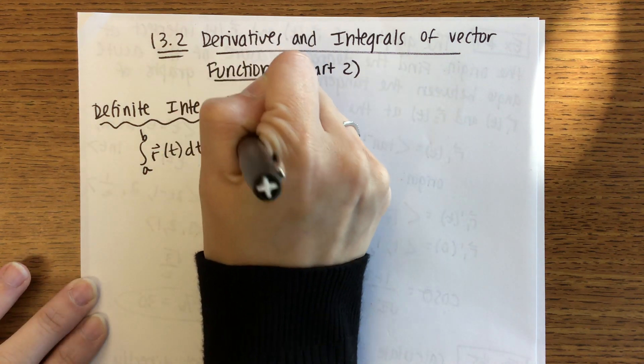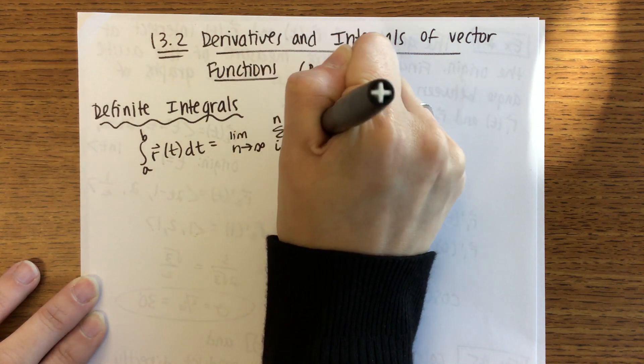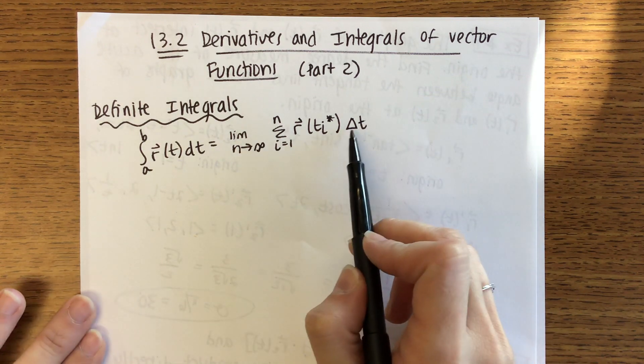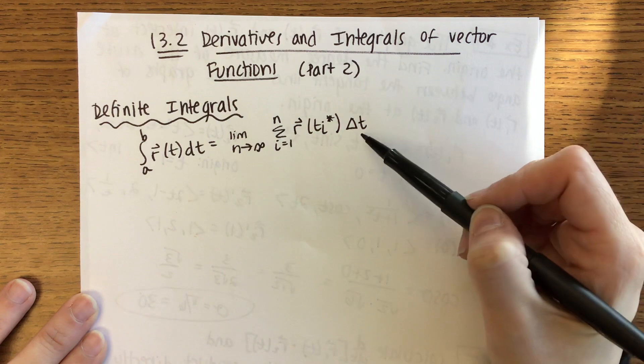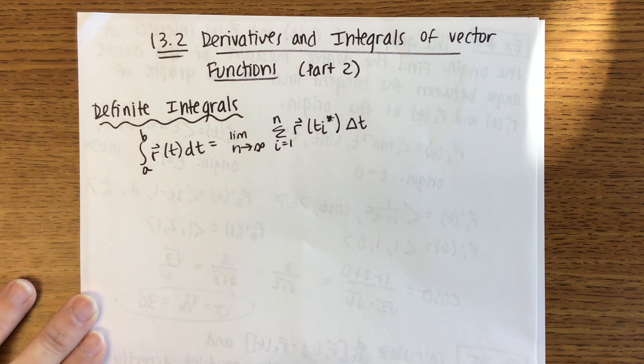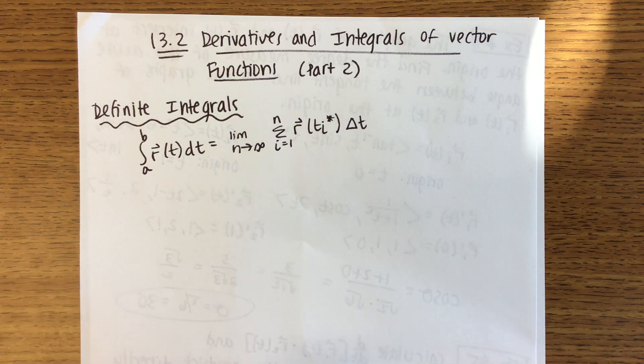You're taking the limit as n goes to infinity of the sum from i equals 1 to n of r(t_i*) times Δt. Here's what this is saying. Δt, that's like your change in x if we're thinking back to calc 2. r(t), that's the height of the rectangle. So you're taking the base of the rectangle and multiplying it by the height to get an area of that one rectangle. When you take n to infinity, you're saying I want those rectangles to be really, really small. What that star means is when you break up your curve into rectangles, you can pick any value in that interval. You can use the left endpoint, the right endpoint, the midpoint, any point in that rectangle to give you the height. So that's the definition in calc 3. It should be similar to what you saw in calc 1 and 2.